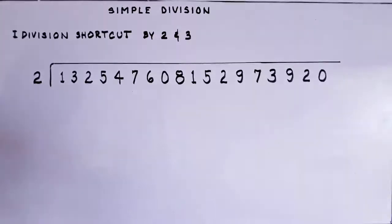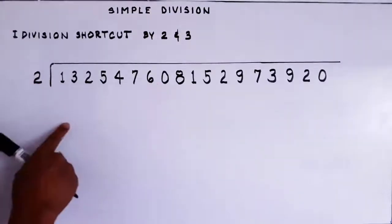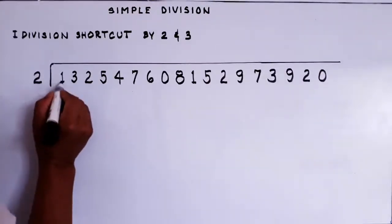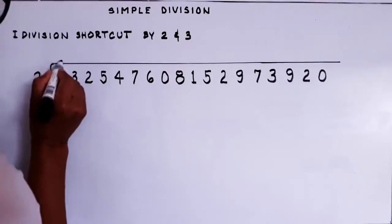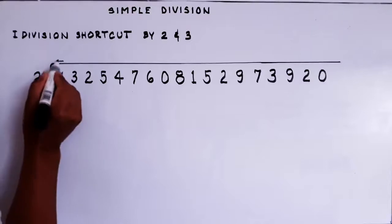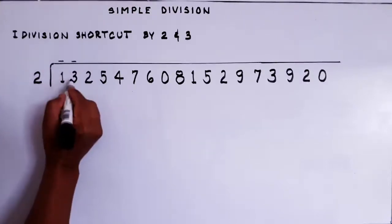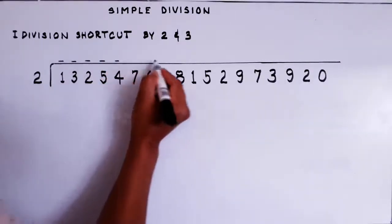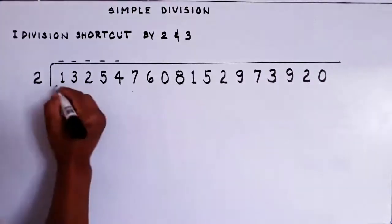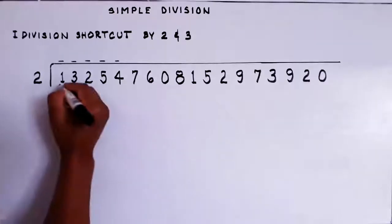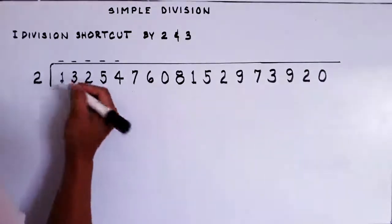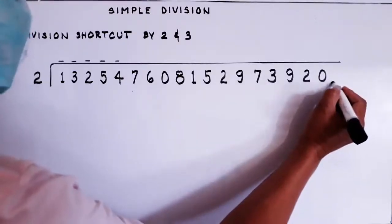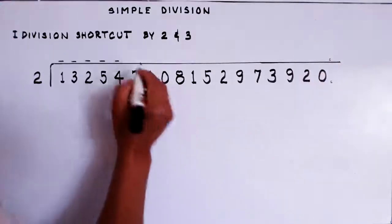Let's divide this number by 2. By the way, class, every digit in the number has a corresponding answer above it — a quotient. The 1 should have a quotient, the 3 should have a quotient, the 2 should have a quotient, the 5 should have a quotient, the 4, and all the way to the last digit. If you are advanced, you will see this number has a decimal point. If you don't see the dot, it means the decimal point is at the very right of the number. You must complete this — every position needs a quotient from zero to nine.